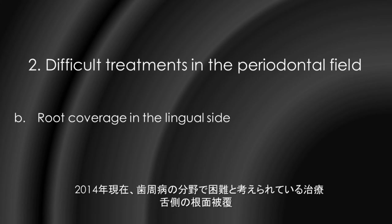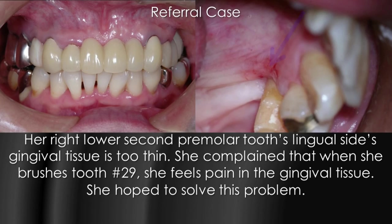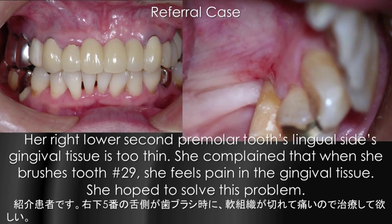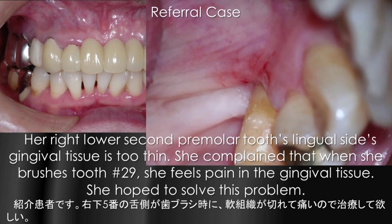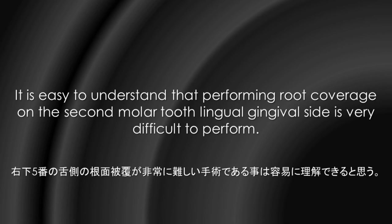Root coverage on the lingual side. Her right lower second premolar tooth's lingual gingival tissue is too thin. She complained that when she brushes tooth number 29, she feels pain in the gingival tissue. She hoped to solve this problem. It is easy to understand that performing root coverage on the second molar tooth's lingual gingival side is very difficult to perform.